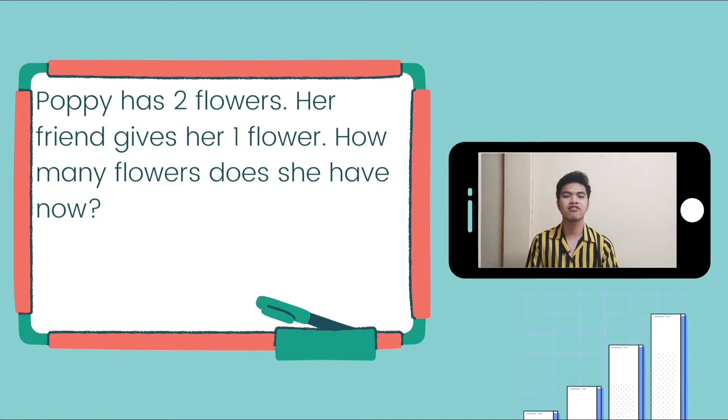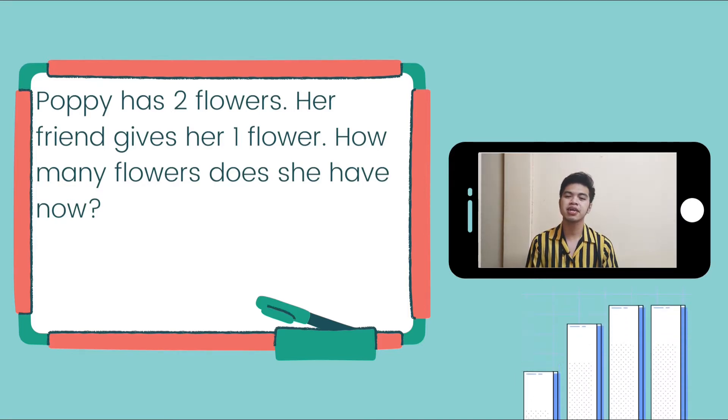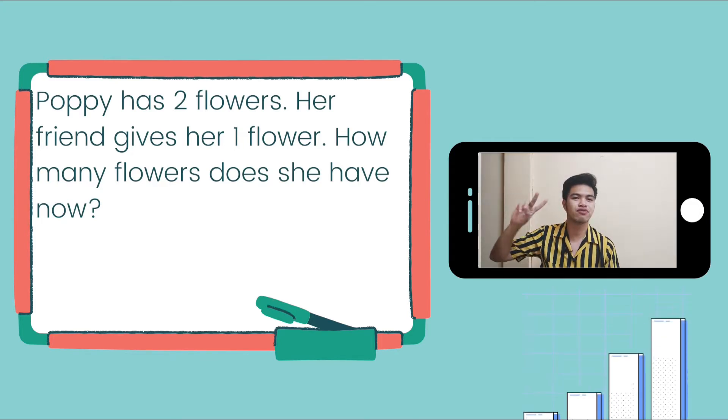We're going to have our first problem. Poppy has two flowers. Her friend gives her one flower. How many flowers does she have now? So, there's a girl and her name is Poppy, and she has two flowers. Remember, she has two flowers.